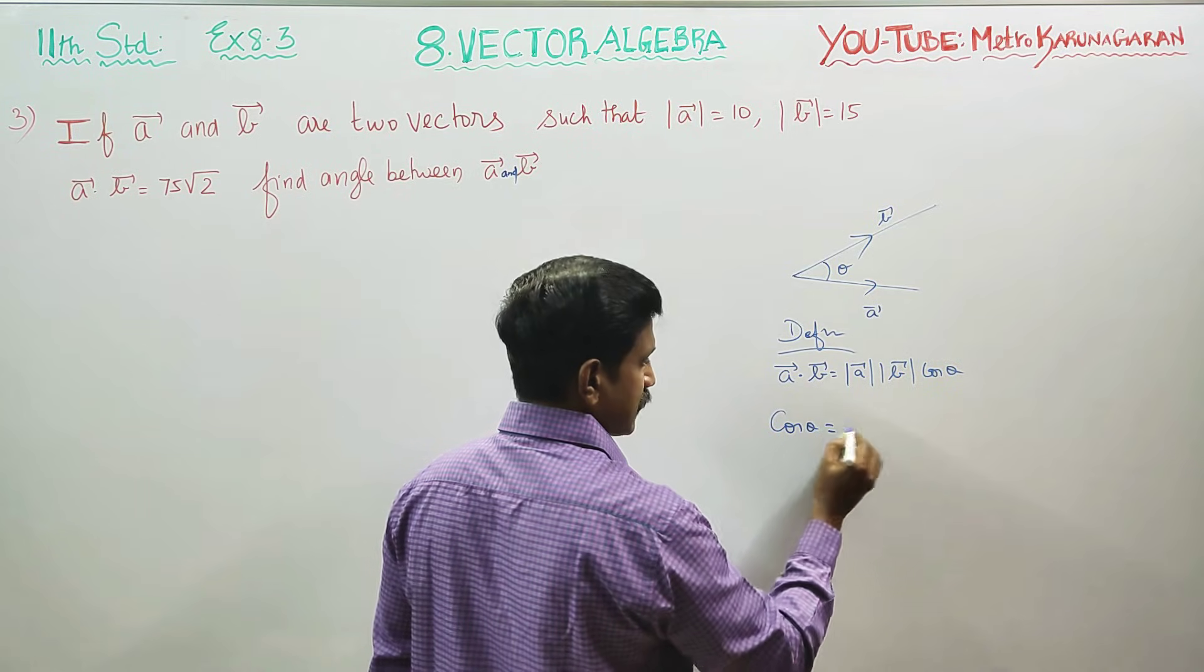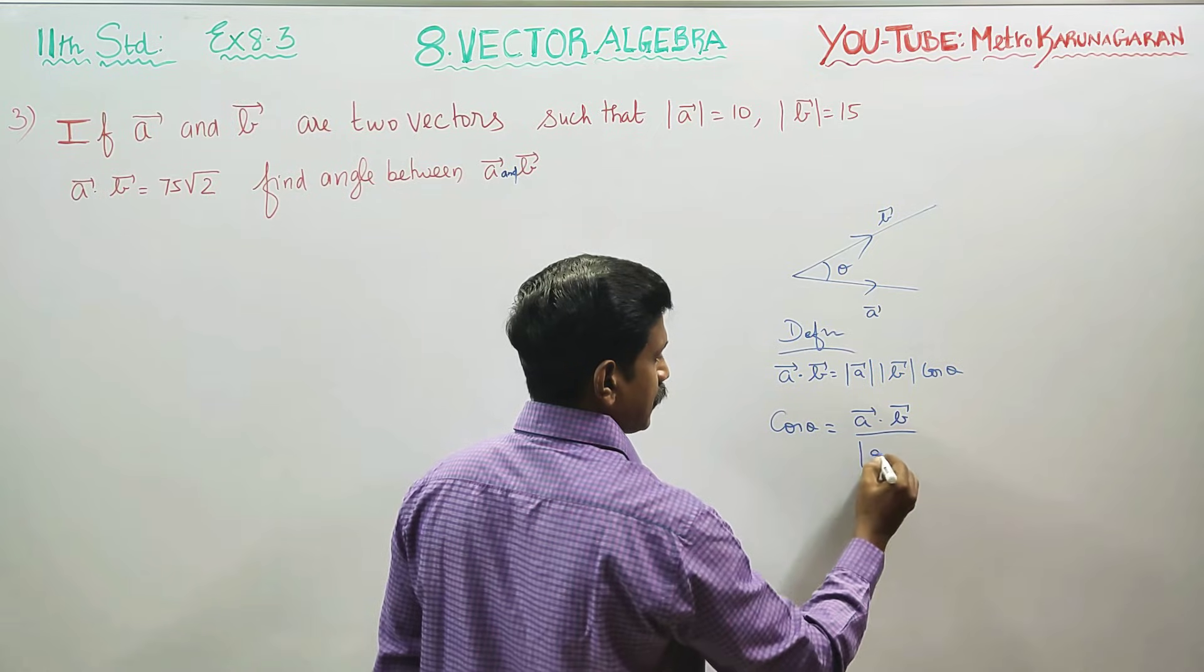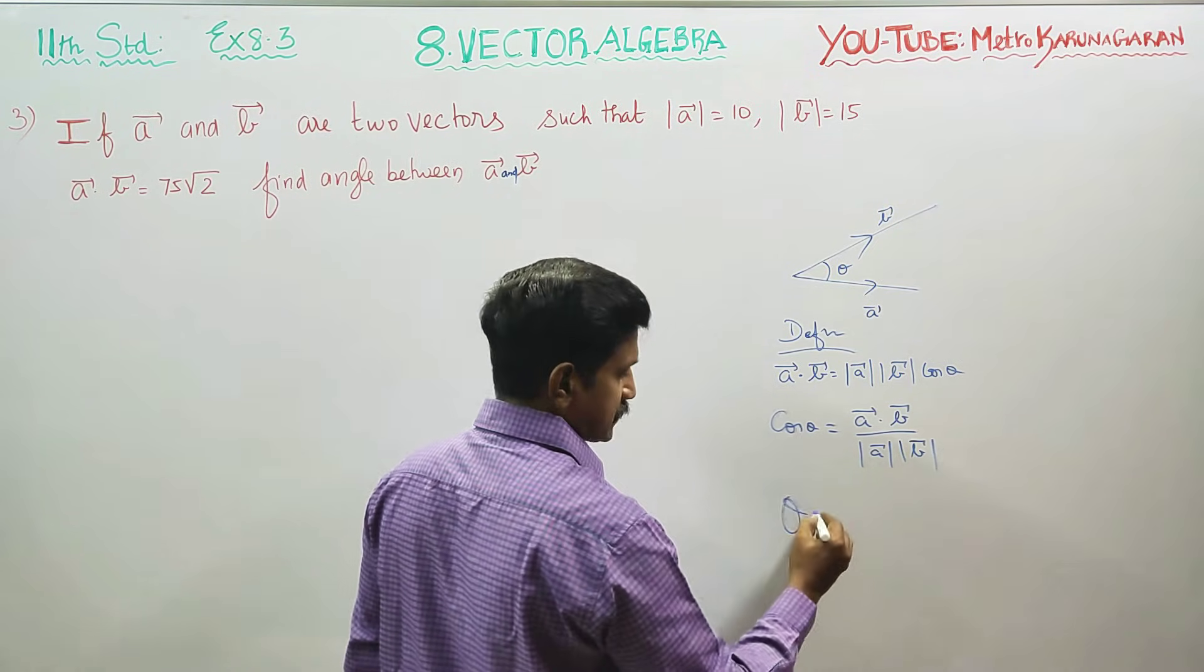This is the formula to find the value of theta, the angle between two vectors A and B.